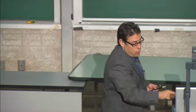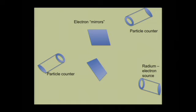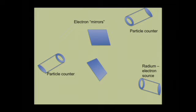He would shoot electrons out of the electron source, they'd bounce off the mirror, and some of them would get into the counter but some would miss. He did this over and over, many many times. Then after a while he would flip the mirror and do it some more. The peculiar thing was that the electrons more often hit when the mirror was pointing to the right than when he had the mirror pointing to the left, even though he let the same number of electrons come out of the radium source.